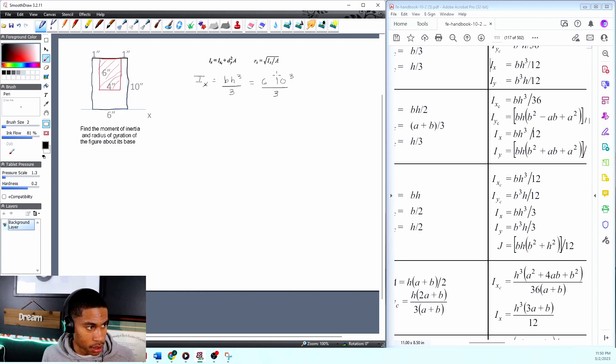What does that give me? So I get 2,000 inches to the fourth from my black box.